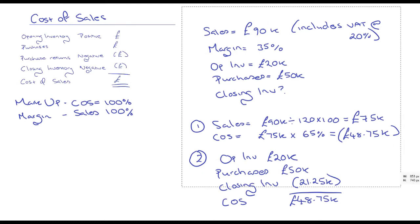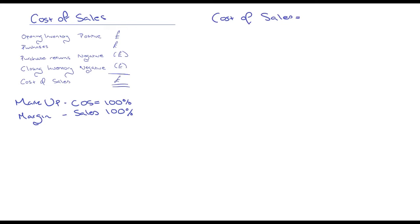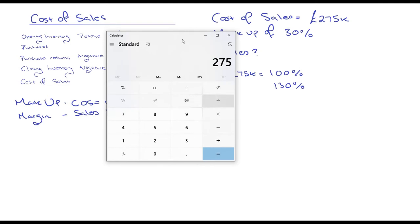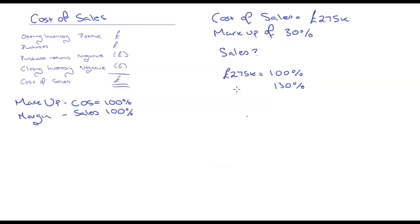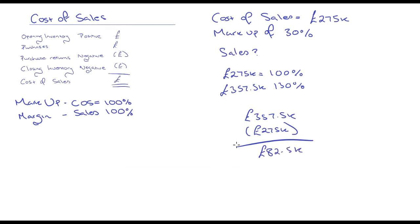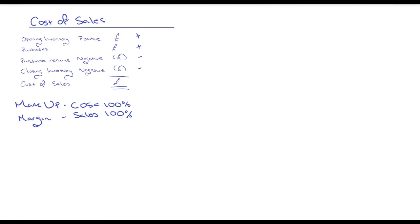Moving on: cost of sales equals 275k with a markup of 30% — what are the sales? Very simple: 275k divided by 100 times 130 gives 357.5k. So sales are 357.5k, and profit is 357.5k minus 275k, which equals 82.5k.